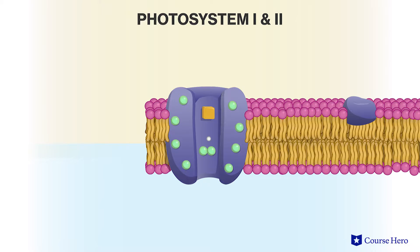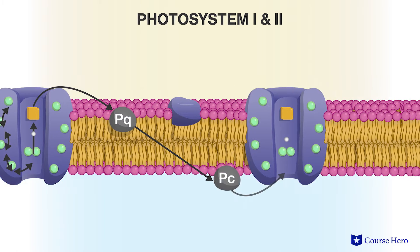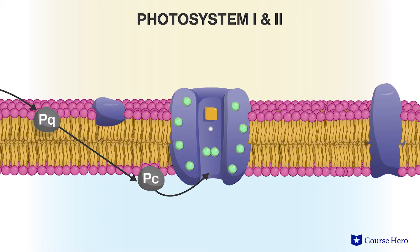The reaction center complex consists of an electron acceptor next to a special pair of chlorophyll molecules. When light strikes one of the chlorophyll pigment molecules in the light-harvesting complex, it excites an electron to a higher energy state. That electron then drops back to its initial state, which releases energy, exciting an electron in the next chlorophyll. Thus, the series of pigment molecules in the light-harvesting complex creates a pathway to the reaction center complex.